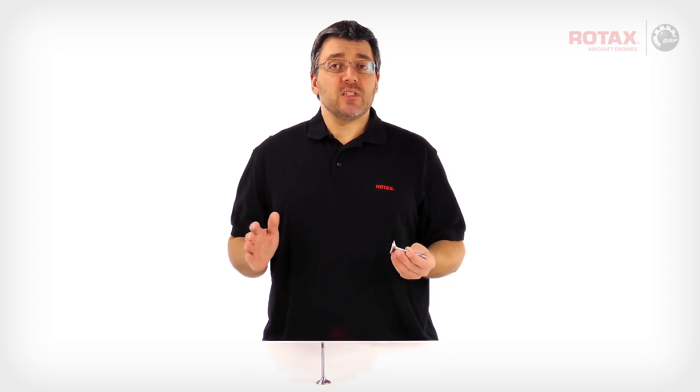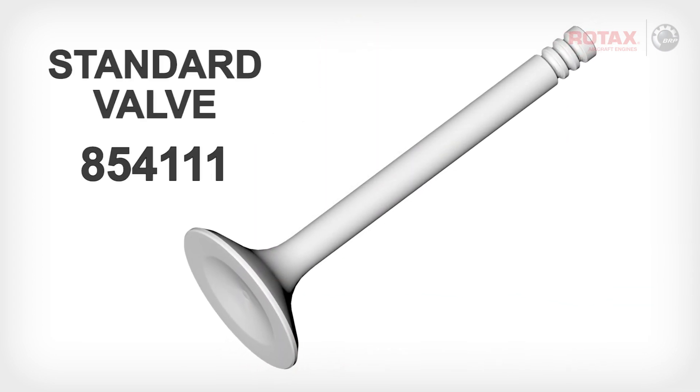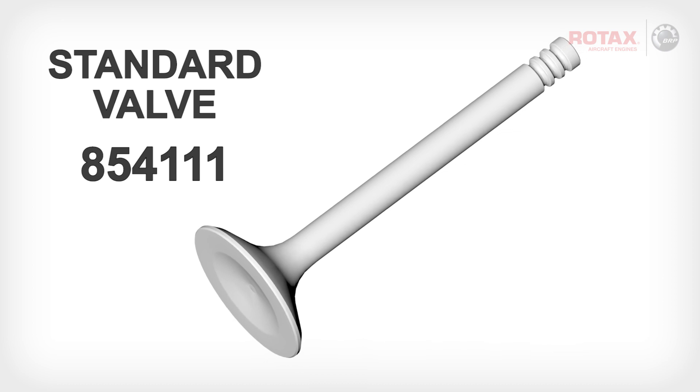So what is the difference between a standard valve and a sodium-filled valve? Standard Rotax exhaust valves are made with solid stainless steel with hardened material at the flute and in the area of the valve cotters or keepers.